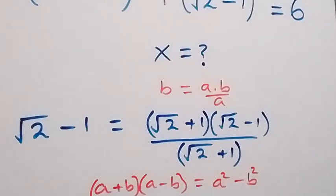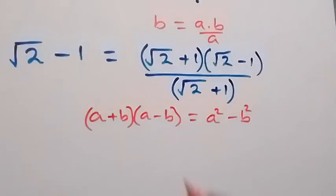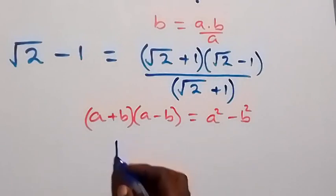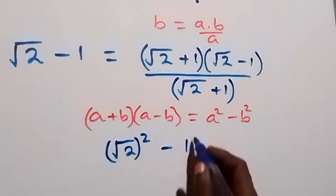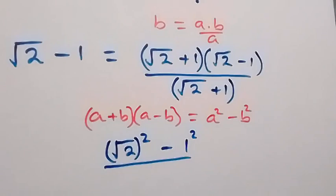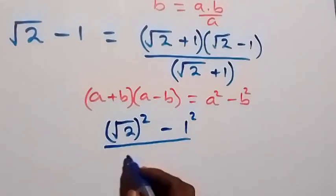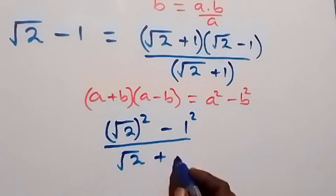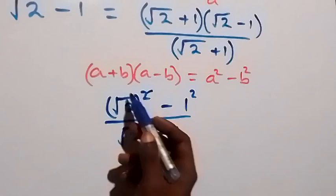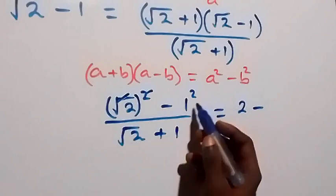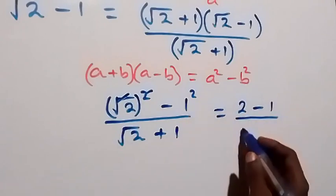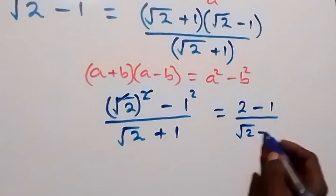We have a squared from there. And here, we can write it now as root 2 squared minus 1 squared, then over what we have here, which is root 2 plus 1 in the denominator. The square cancels the square root, which gives us 2, then minus — here 1 squared is 1 — then over root 2 plus 1.